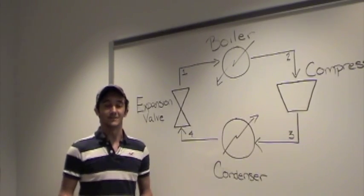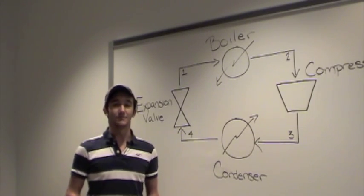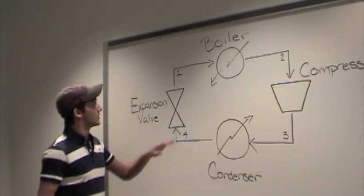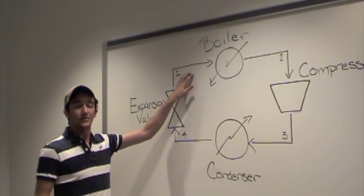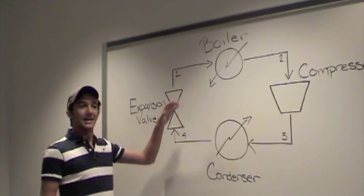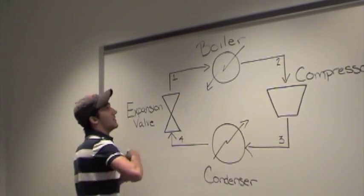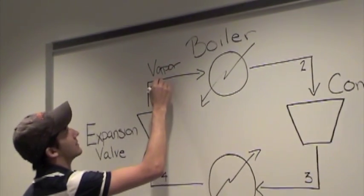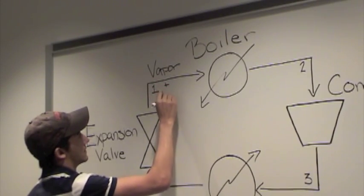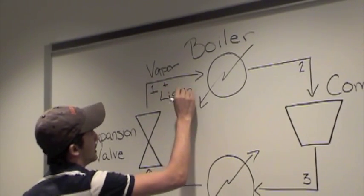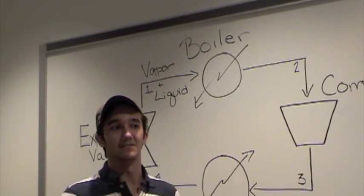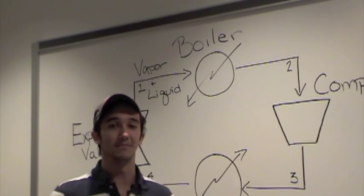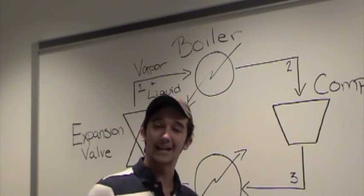Now that we have a better understanding of the relationship between pressure and temperature and the boiling point of a liquid, let's go back to our example and cycle. Initially, the R134A exists as a vapor and a liquid. Then, it moves through the boiler where it becomes a saturated vapor. A saturated vapor is a vapor that is, for a specific pressure, at the lowest temperature it can be at before it condenses back into a liquid.